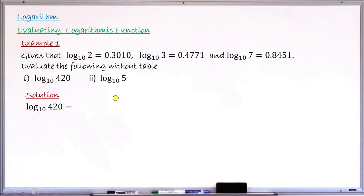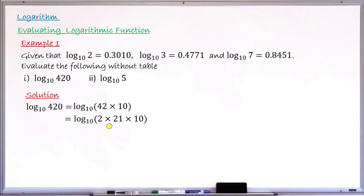So 420 equals 42 times 10, and 42 is 2 times 21. Now 21 must be split again: 21 equals 3 times 7. So I now have 2 times 3 times 7 times 10, which gives me 420. We have now split 420 using 2, 3, and 7, along with 10.